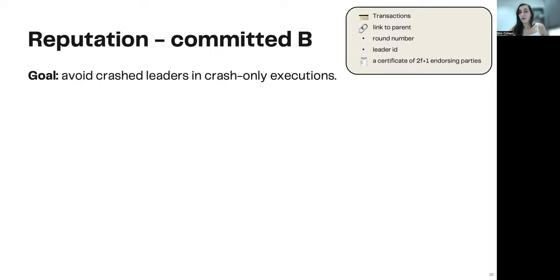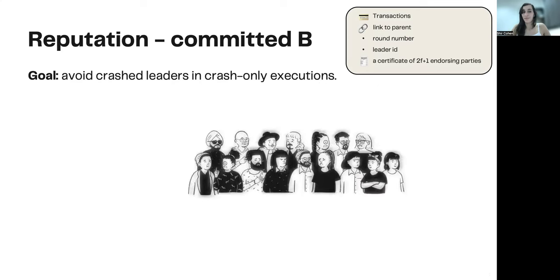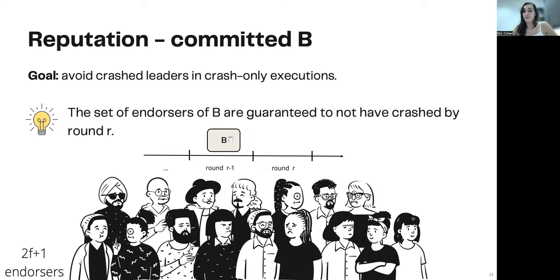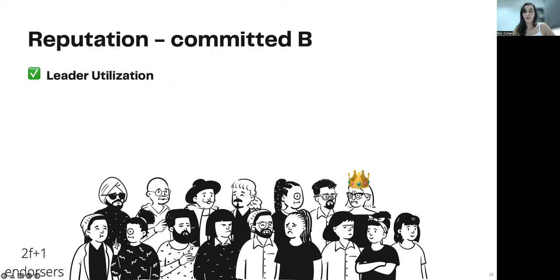Our main goal in general is to avoid choosing crashed leaders in the protocol. Recall that in each block, there are, among other details, a set of 2f plus 1 endorsers. We take advantage of this information. So here we have the set of 2f plus 1 endorsers from the block B we committed in the previous round. Since the 2f plus 1 parties have participated in forming block B, the block for the previous round, we know for a fact that they have not crashed by then, meaning that in this interval, they lived and participated in the protocol. This raises the possibility of choosing any of these endorsers to be the leader for round R. We know for a fact that they have not crashed yet. This provides us with leader utilization.